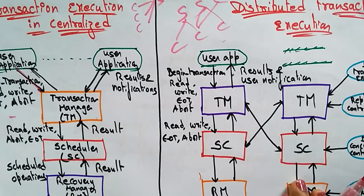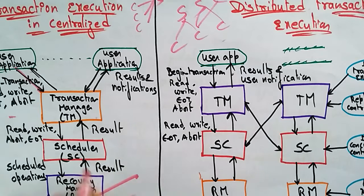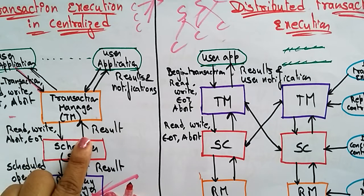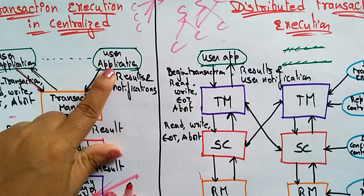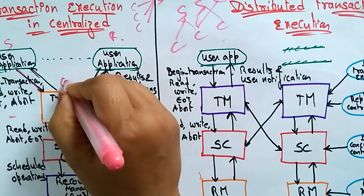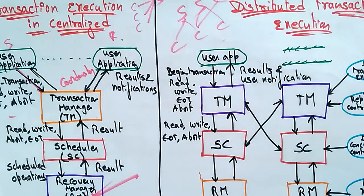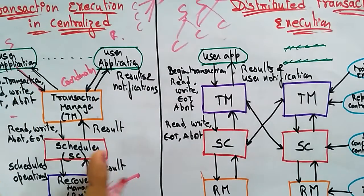The scheduler sends scheduled operations to the recovery manager. The recovery manager performs the operation — whether it has to read, write, abort, or end the transaction — and sends the result back to the scheduler. That result is sent back to the transaction manager, and any user notifications are sent to the user application. Here, the transaction manager acts as the coordinator.